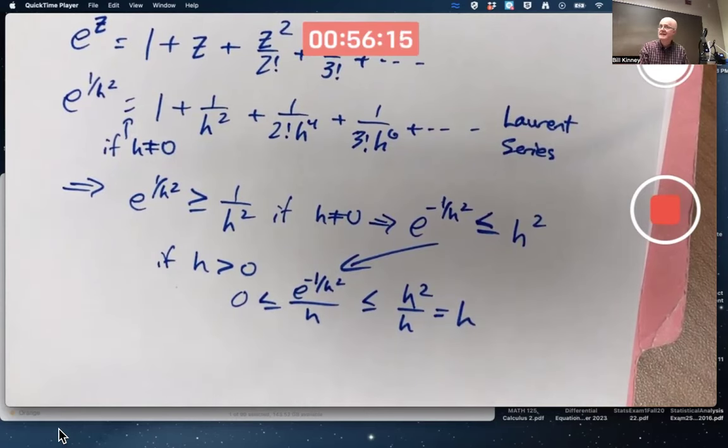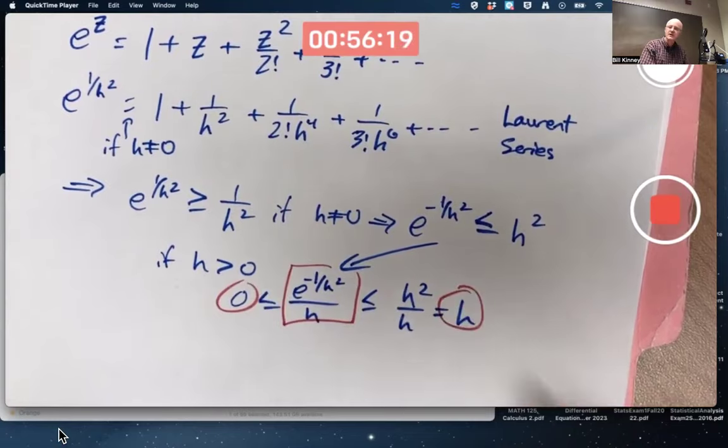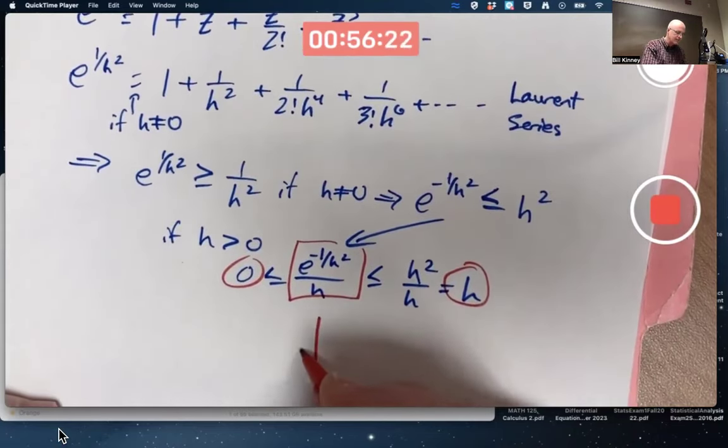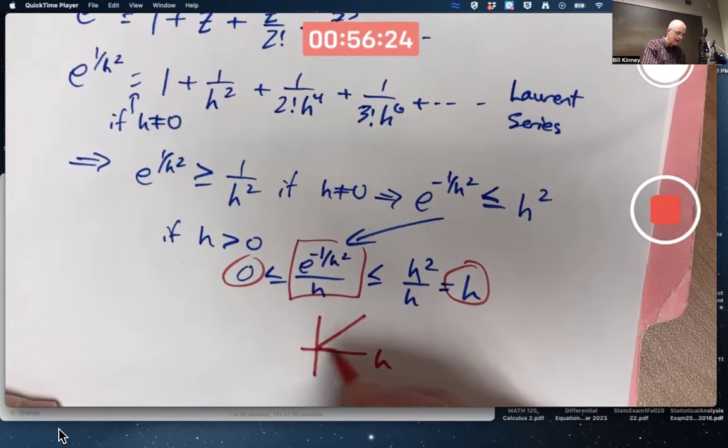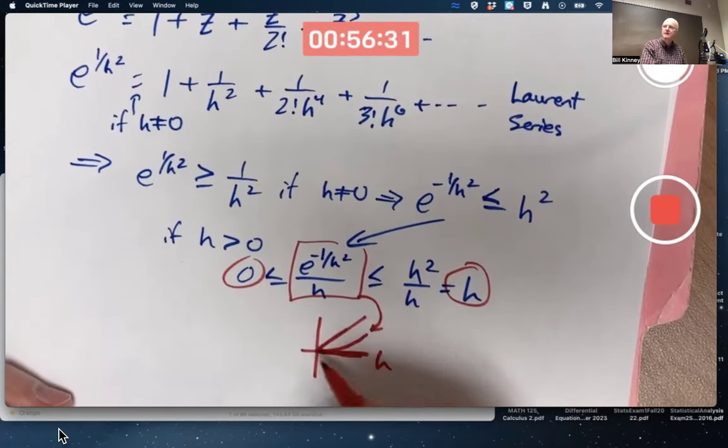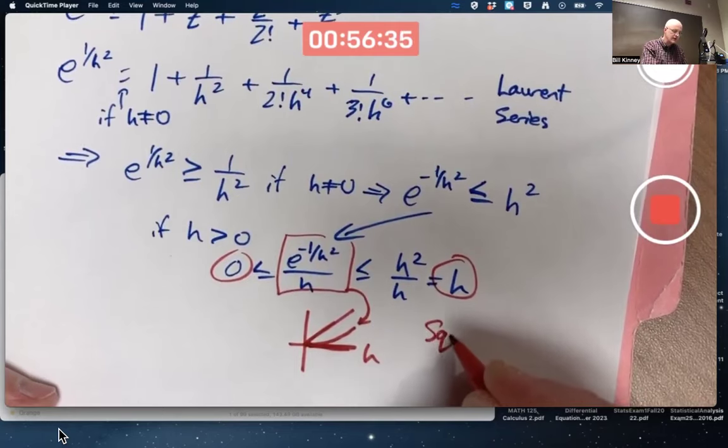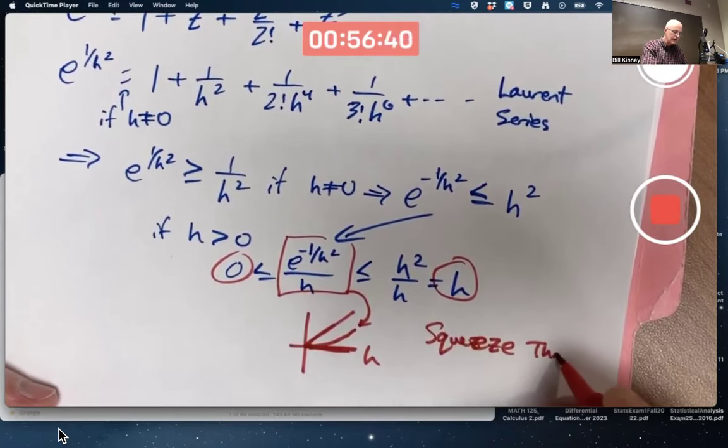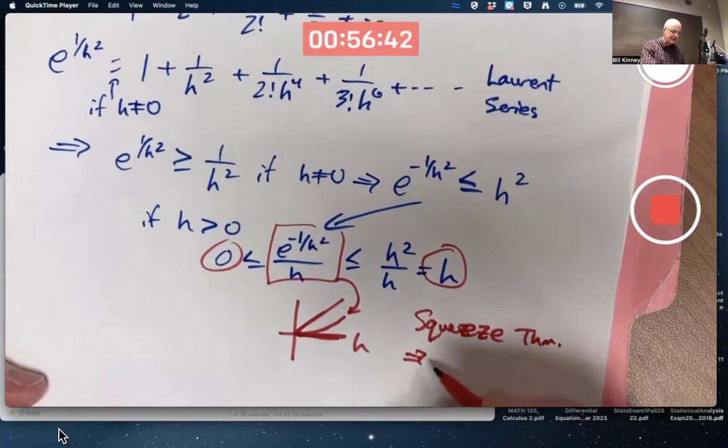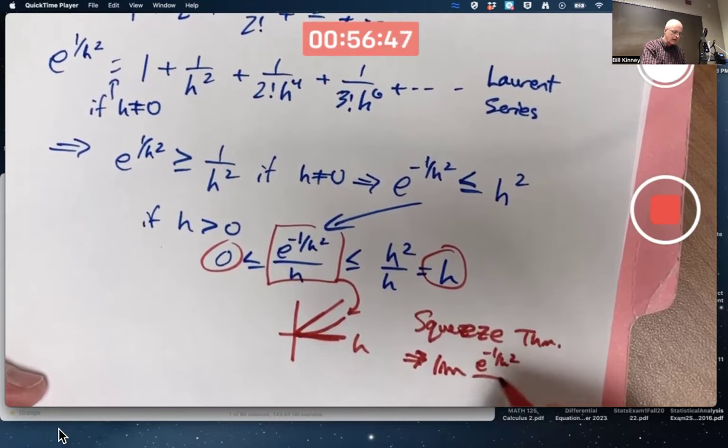And what I can do now to verify that this thing goes to zero as h goes to zero is I can use something called the squeeze theorem. This thing is stuck between these two functions, thinking of them as functions of h. The graph we're interested in, this graph, is stuck between them. Both of those graphs go to zero as h goes to zero, therefore this one goes to zero. The squeeze theorem. You can look this up: squeeze theorem.